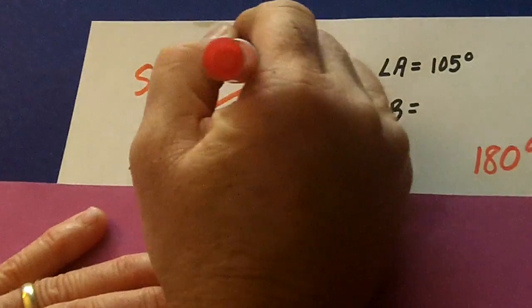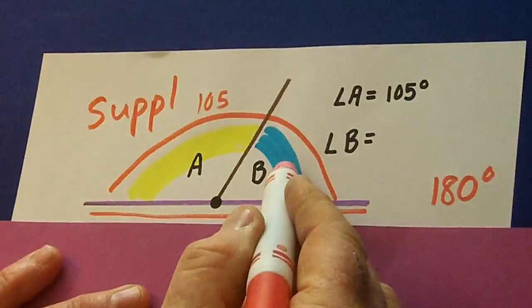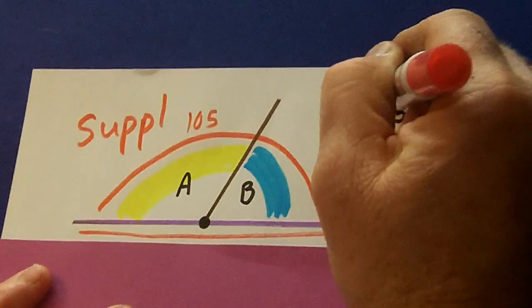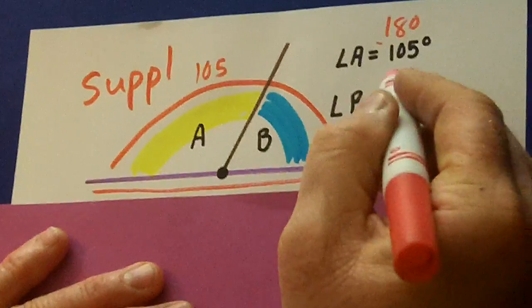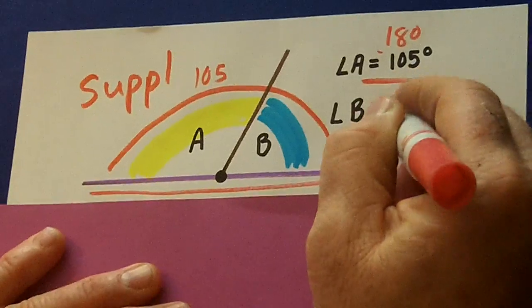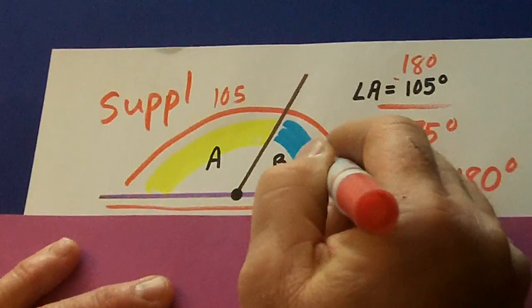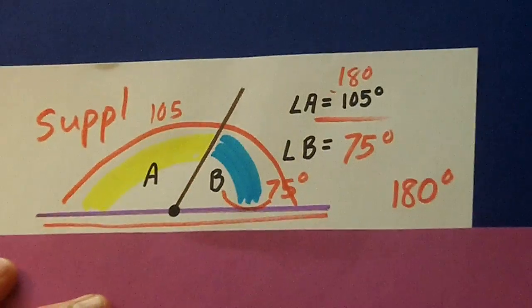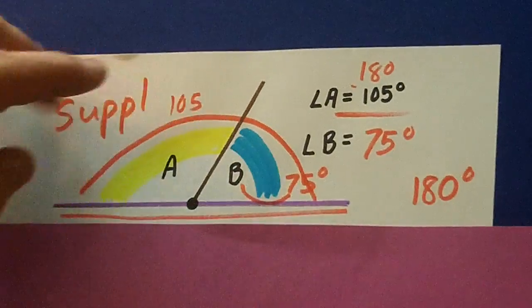So it says A is 105. So B must be 180 minus 105. And so that's 75 degrees. 75 degrees is B. And those were supplementary angles.